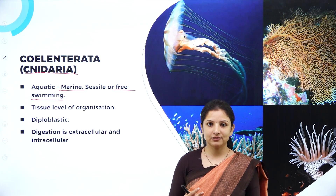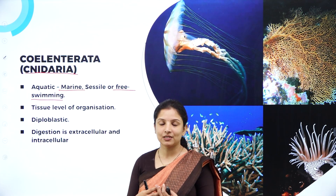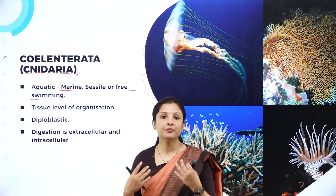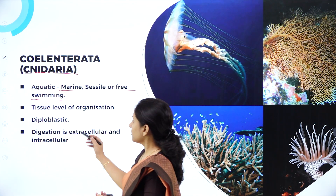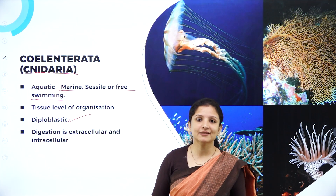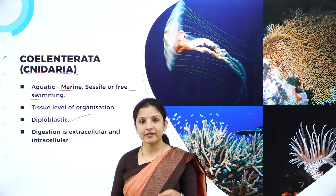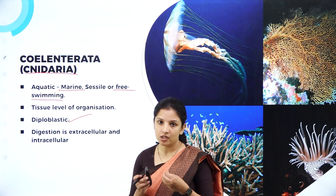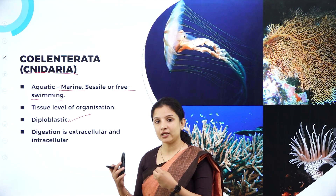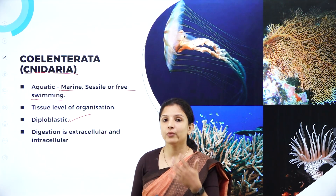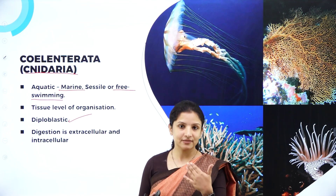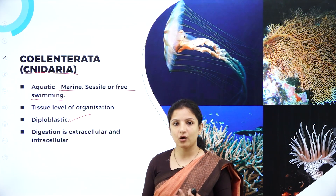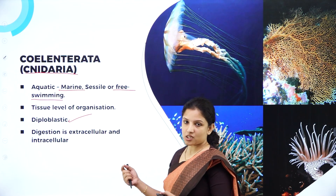Talking about the level of organization, they show tissue level of organization, wherein a group of cells which are closely packed come together to perform a particular function. Their mode of cell arrangement is diploblastic, wherein the cells are arranged in two embryonic layers — an outer ectoderm and an inner endoderm. All this we have studied in session one of this chapter, wherein we learned about the basis for characterizing an organism.